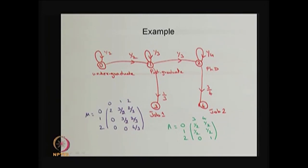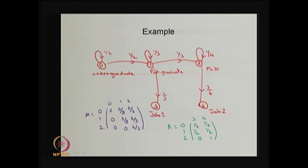If you start from the postgraduate state, then with certain probabilities you may end up in job 1 or job 2. Whereas if you begin with the PhD program, you will definitely end up in job 2 with probability 1, because there is no arc from state 2 to job 1. Therefore, the probability of absorption into job 1 starting from state 2 is 0, and into job 2 is 1. This is the probability distribution of absorption starting from these transient states.